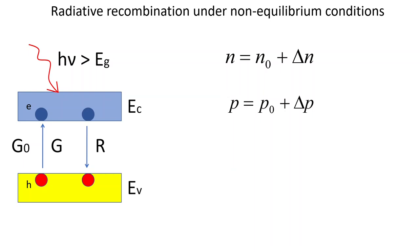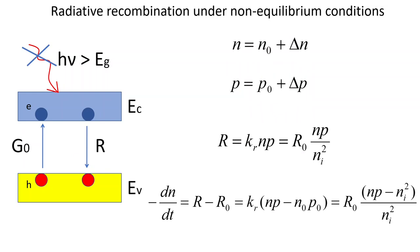When we shine light with photon energy larger than the band gap, this creates additional generation of non-equilibrium charge carriers through photogeneration. The total generation rate adds the photogeneration term to the thermal equilibrium generation G0. The recombination rate will no longer be R0 because the concentration of electrons and holes in the semiconductor volume is now different.